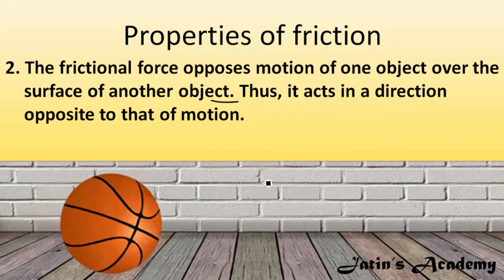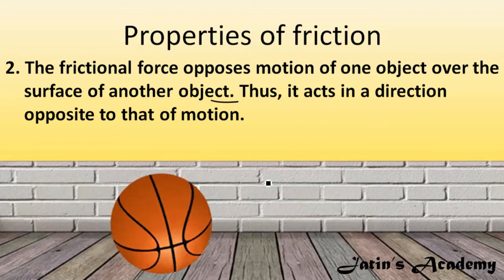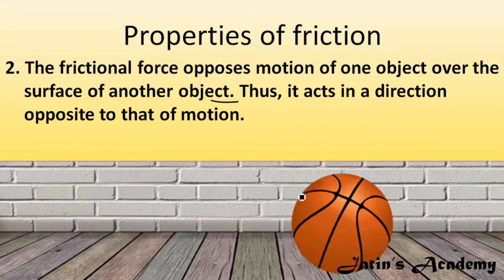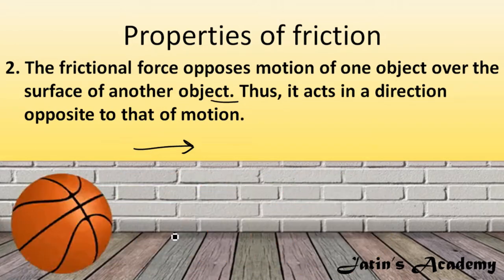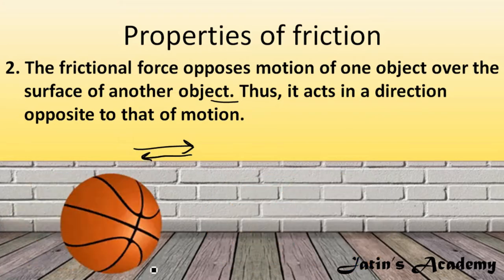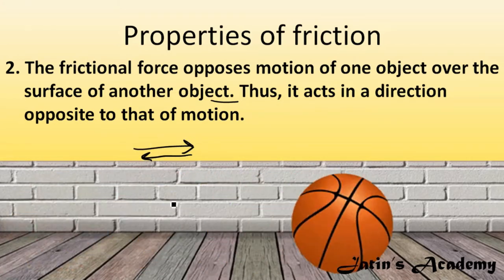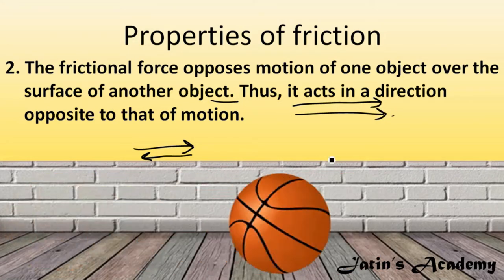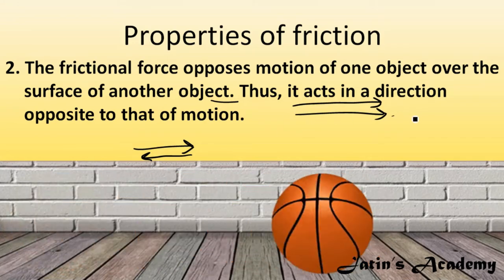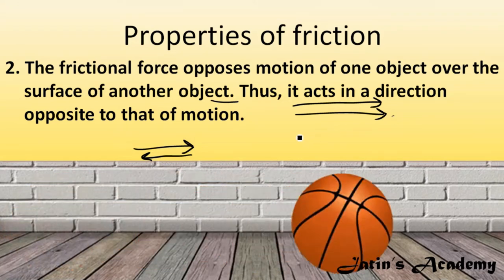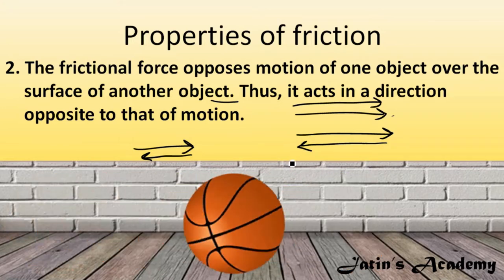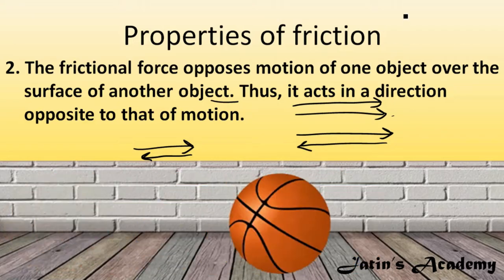Second property: frictional force opposes the motion of one object over the surface of another. Friction always slows down the motion of an object. If a ball is moving in one direction, frictional force always acts in the opposite direction — that is how it slows things down. If a force acts in the same direction as motion, it speeds the object up; if it acts in the opposite direction, motion slows down. So frictional force acts opposite to the direction of motion.